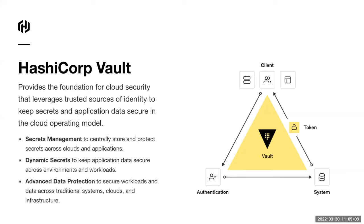The second use case is around data encryption or data protection — the idea of creating middleware for your developers to help them protect their applications. These are APIs that you give to internal developers so they can protect data using Vault. Finally, we have an advanced data protection module, which extends data protection into other applications — things like storage arrays for data-at-rest encryption, or connecting to a database for tokenization of PII data.